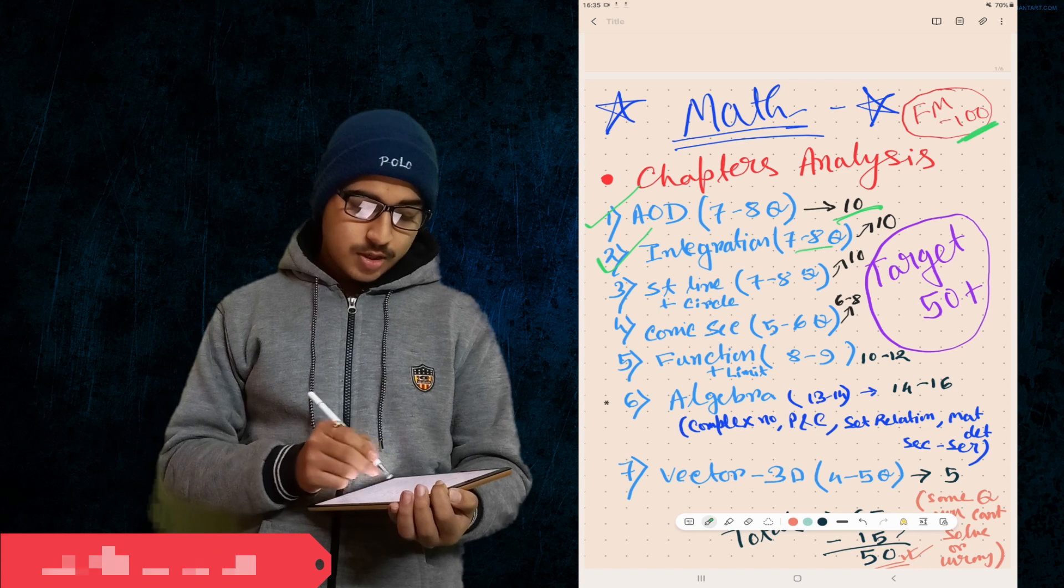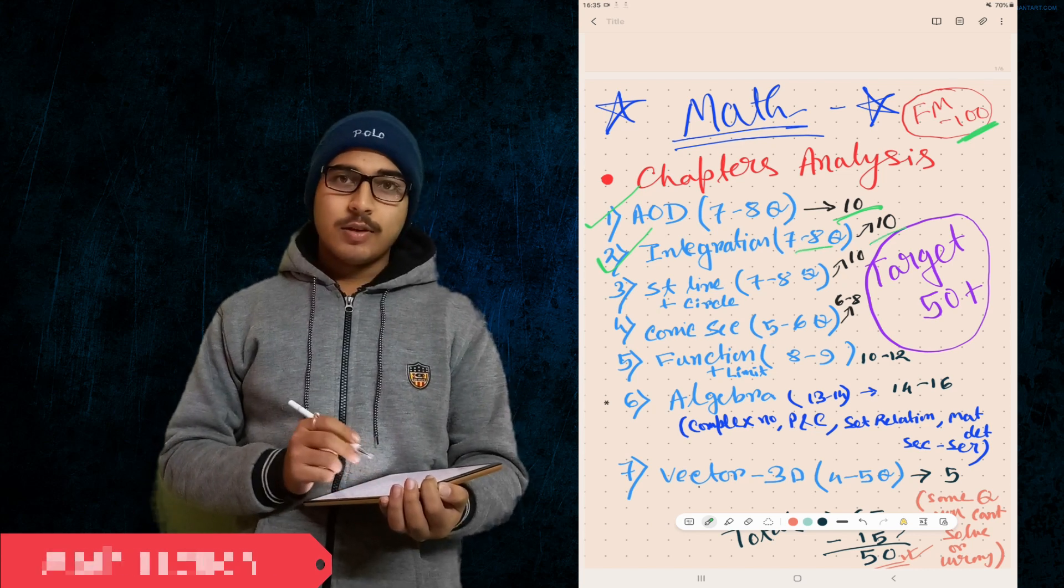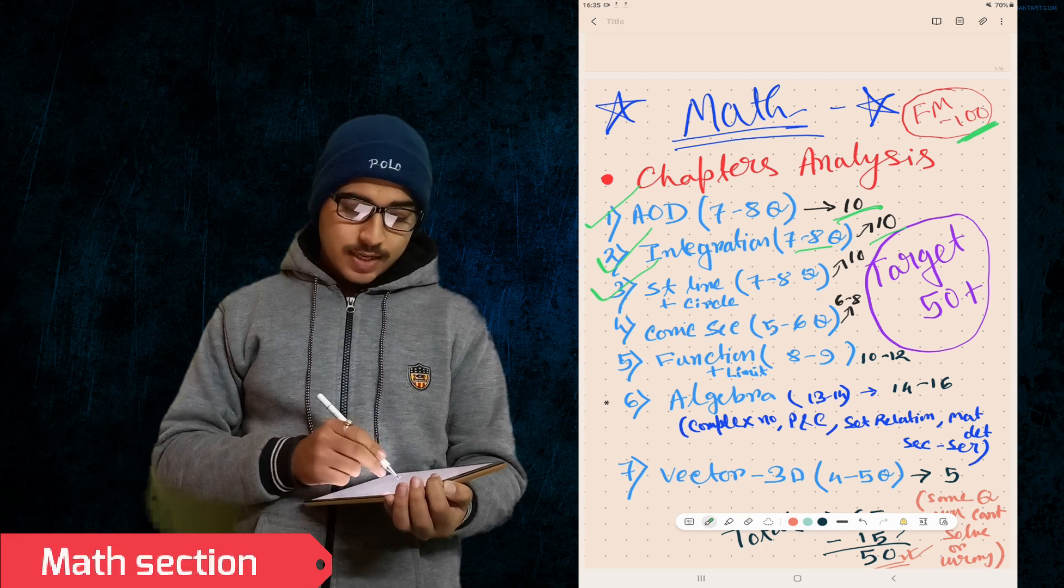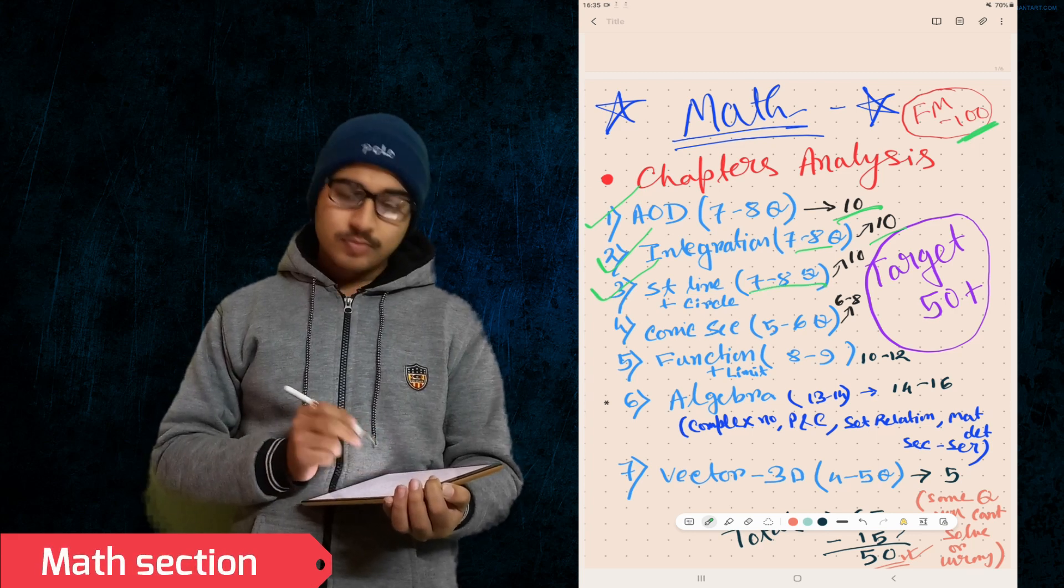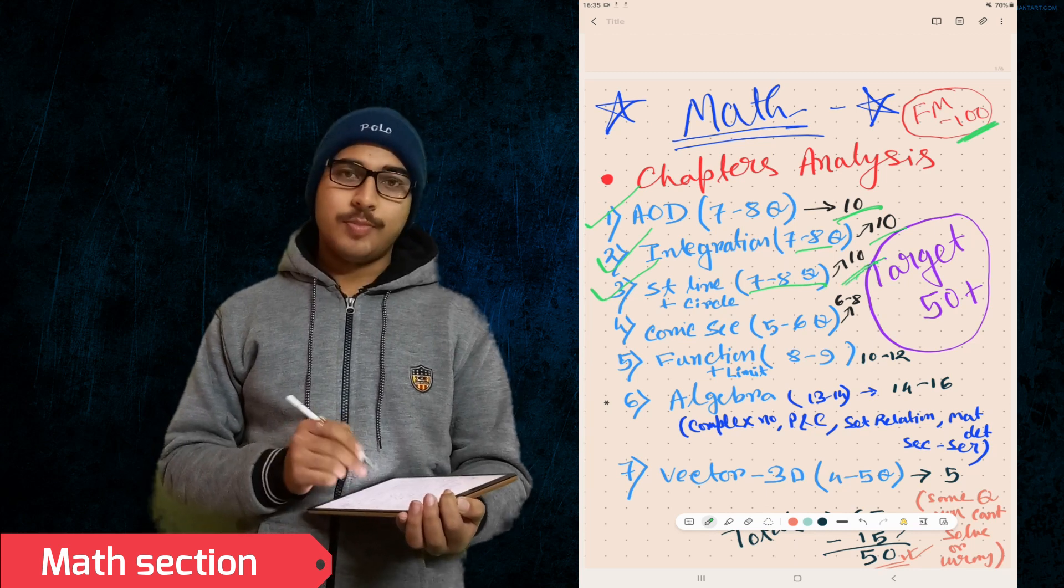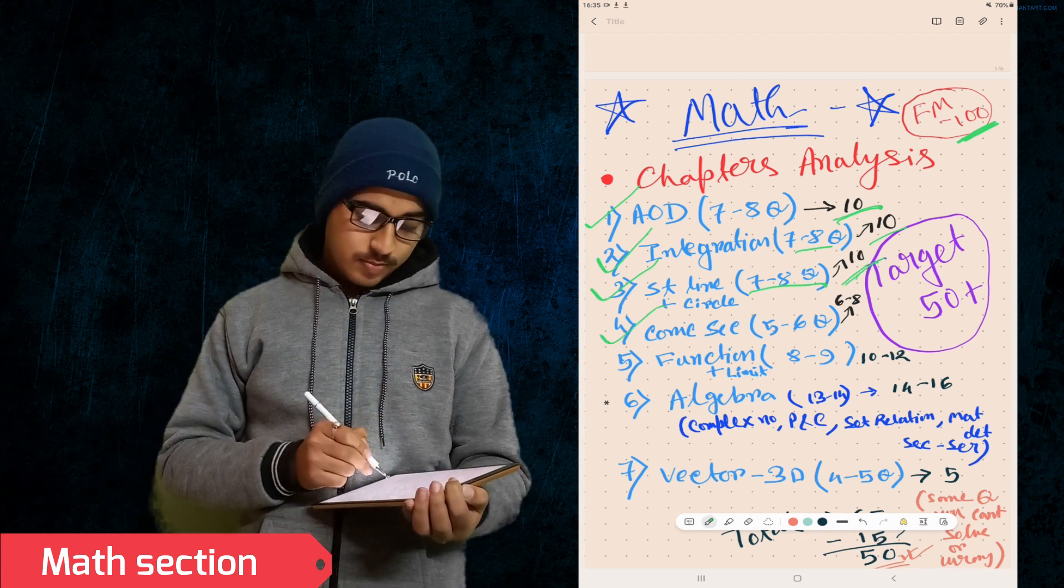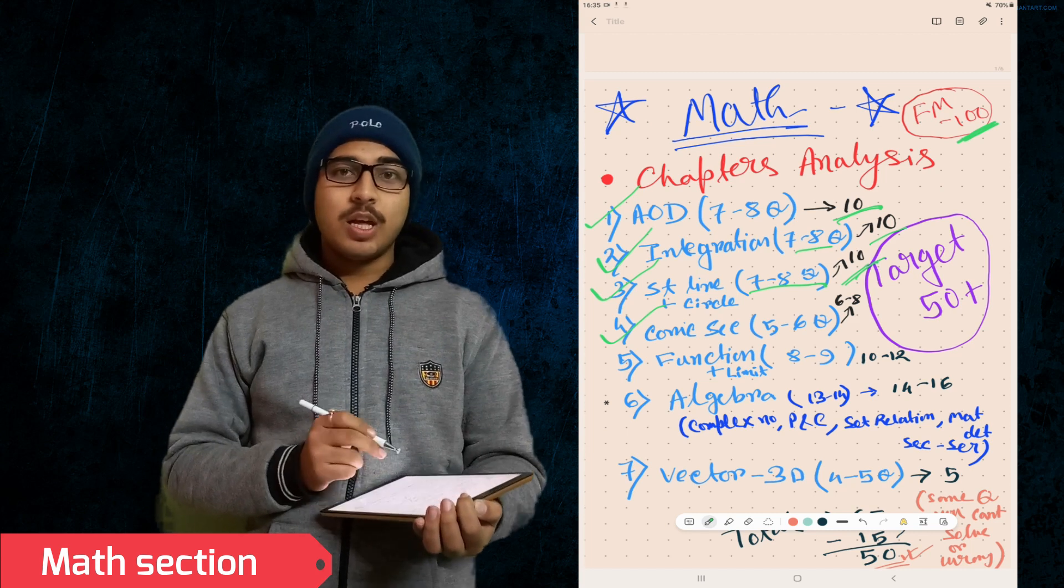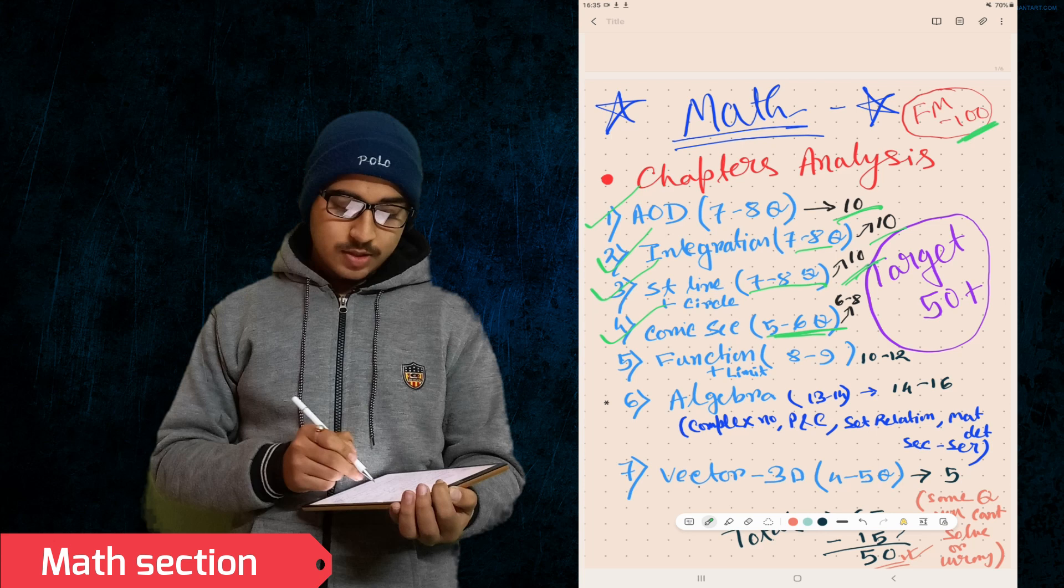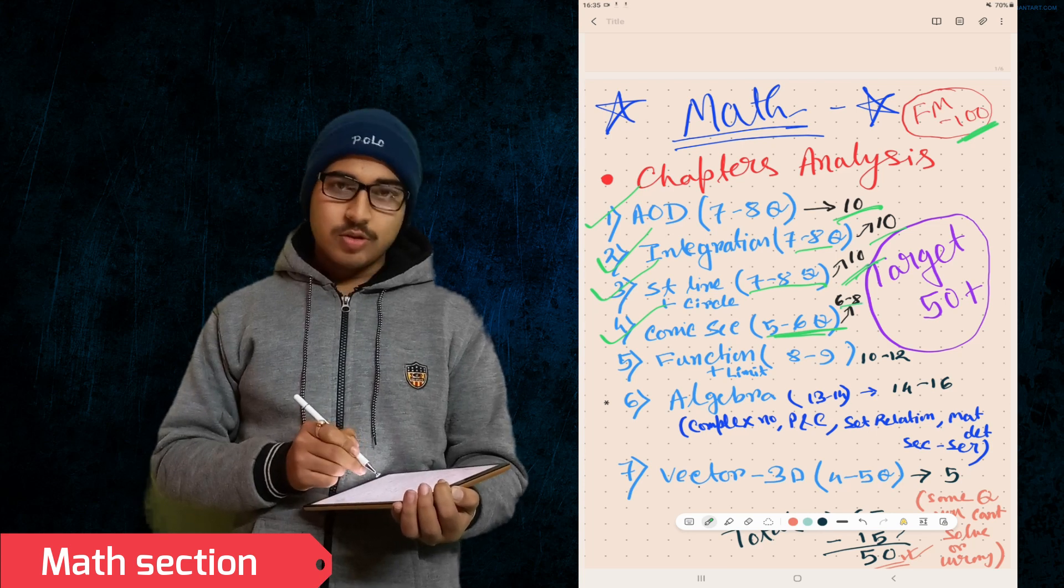Then comes Straight Line and Circle. These two chapters, almost seven to eight questions, you can get 10 marks from here also. Then comes Conic Sections - parabola, ellipse, hyperbola. From this chapter you get five to six questions and six to eight marks.